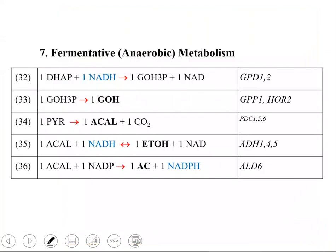Here you see a list of reactions representing those anaerobic fermentative pathways: formation of acetaldehyde, ethanol, and acetate, with NADH consumption shown. These are again from yeast. In mammalians, there is also lactate production.